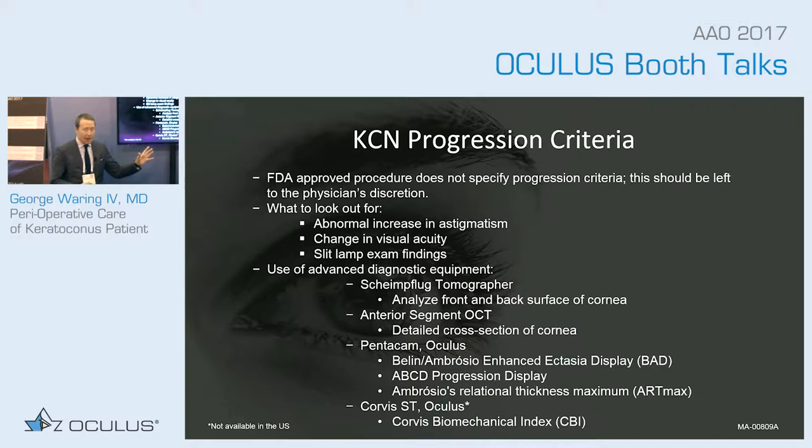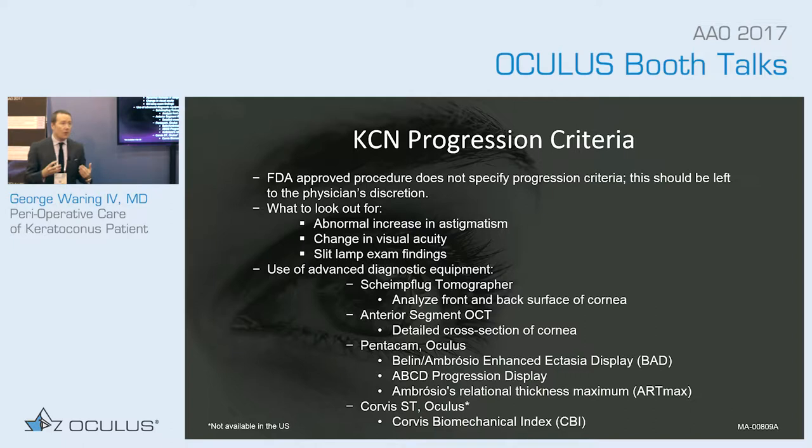The ABCD progression display is the next iteration for understanding progression, and the Ambrósio Relational Thickness Maximum, or ART Max, which we have found to be very useful in our practice — not only for keratoconics but also for identifying good candidates for laser vision correction. We don't want to create iatrogenic ectasia, so this really is a broad spectrum of being able to assess patients.